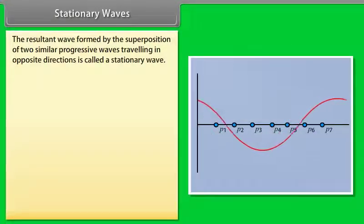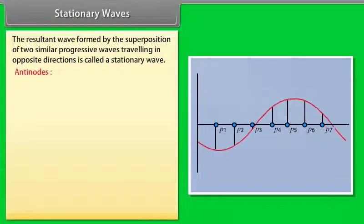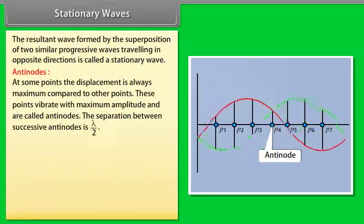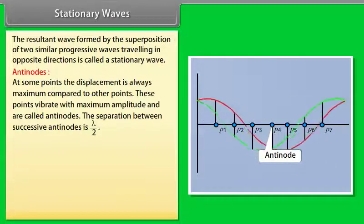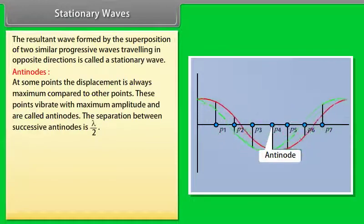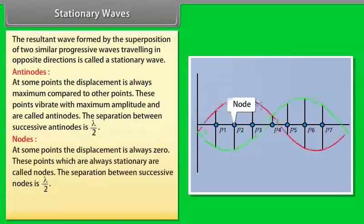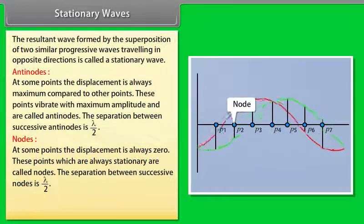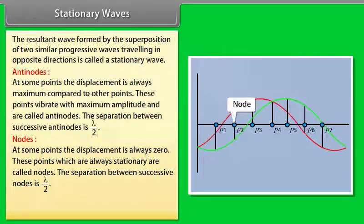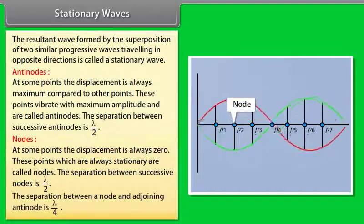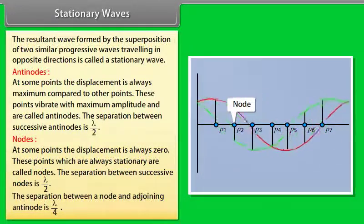The resultant wave formed by the superposition of two similar progressive waves traveling in opposite directions is called a stationary wave. At antinodes, the displacement is always maximum and these points vibrate with maximum amplitude; the separation between successive antinodes is λ/2. At nodes, the displacement is always zero; the separation between successive nodes is also λ/2. The separation between a node and an adjoining antinode is λ/4.